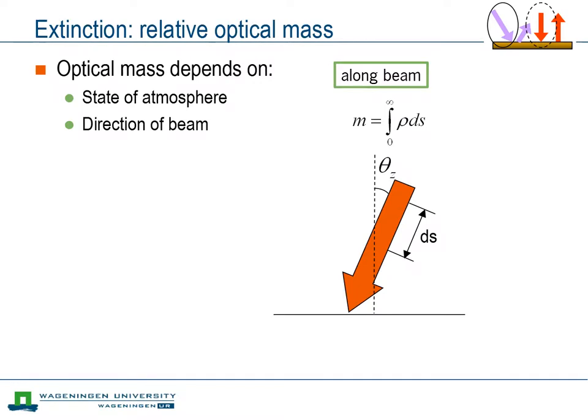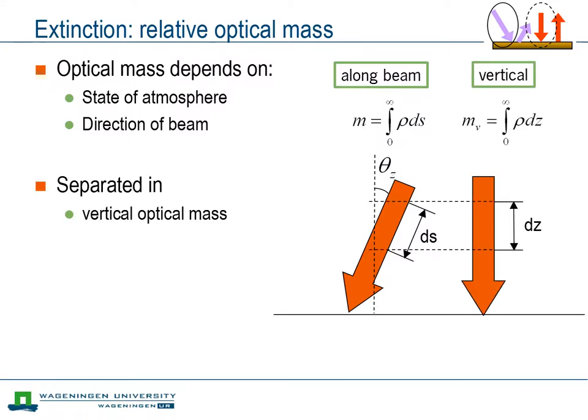The optical mass depends on the state and composition of the atmosphere, and on the direction of the beam. In order to separate these two effects, the vertical optical mass is introduced. As this is equal to the vertical integral of density, it is only dependent on the state of the atmosphere.